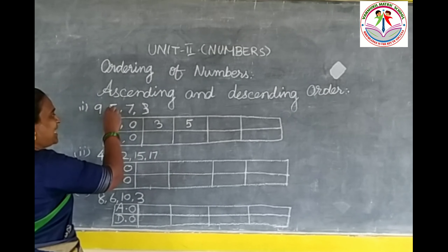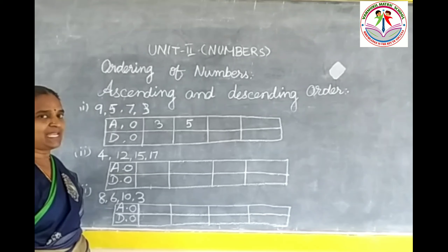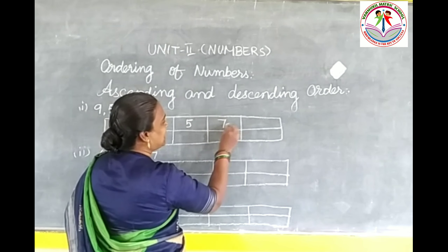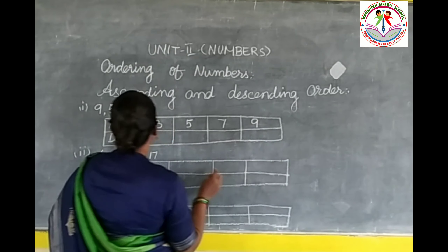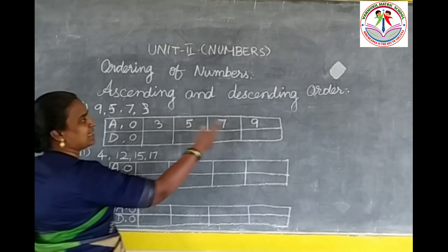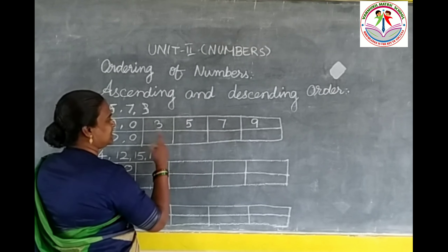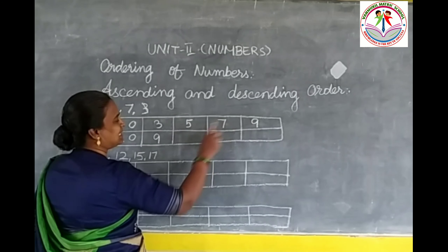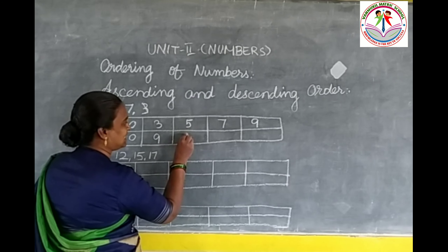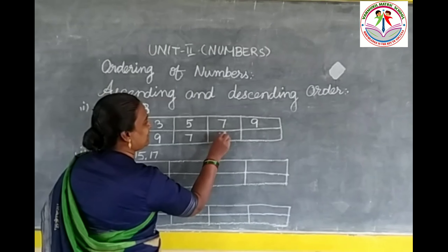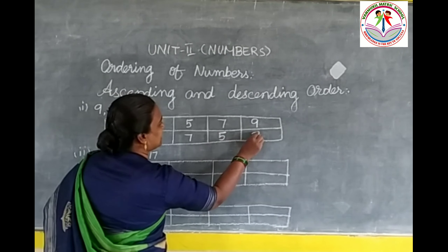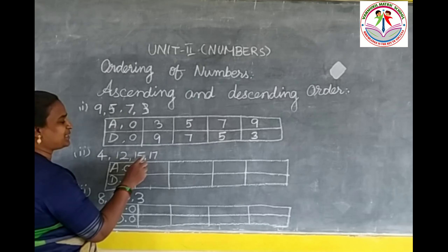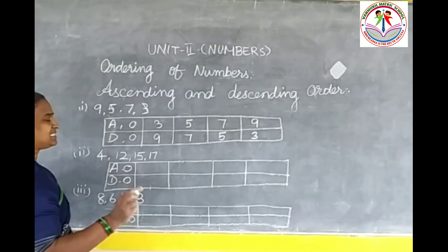Then, which is the next smallest number? 5 is the next smallest. Comparing the remaining two numbers, 7 is next, and at last you write 9. The descending arrangement is the inverse because 9 is the biggest number. So the ascending order is 3, 5, 7, 9.